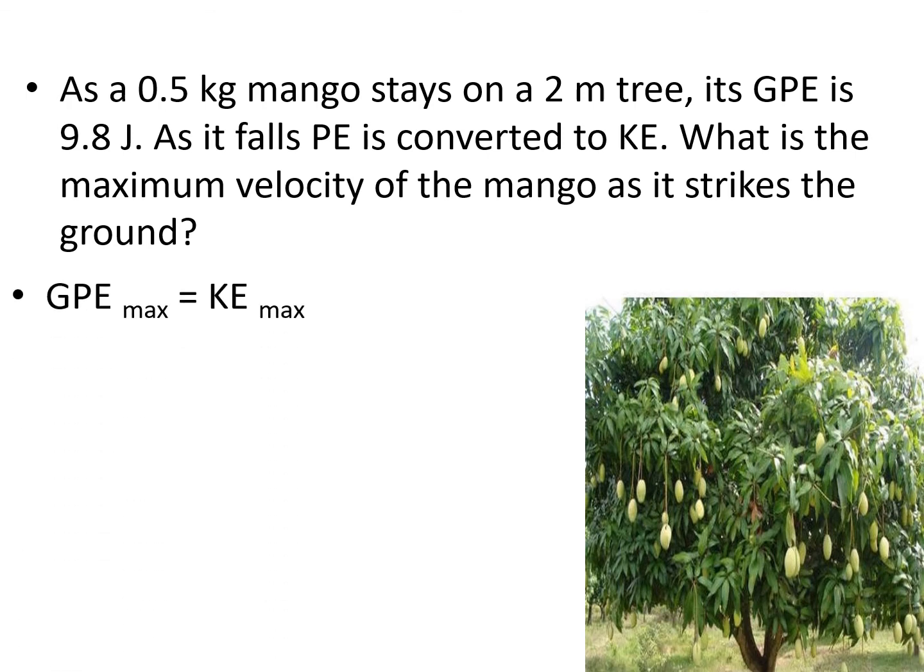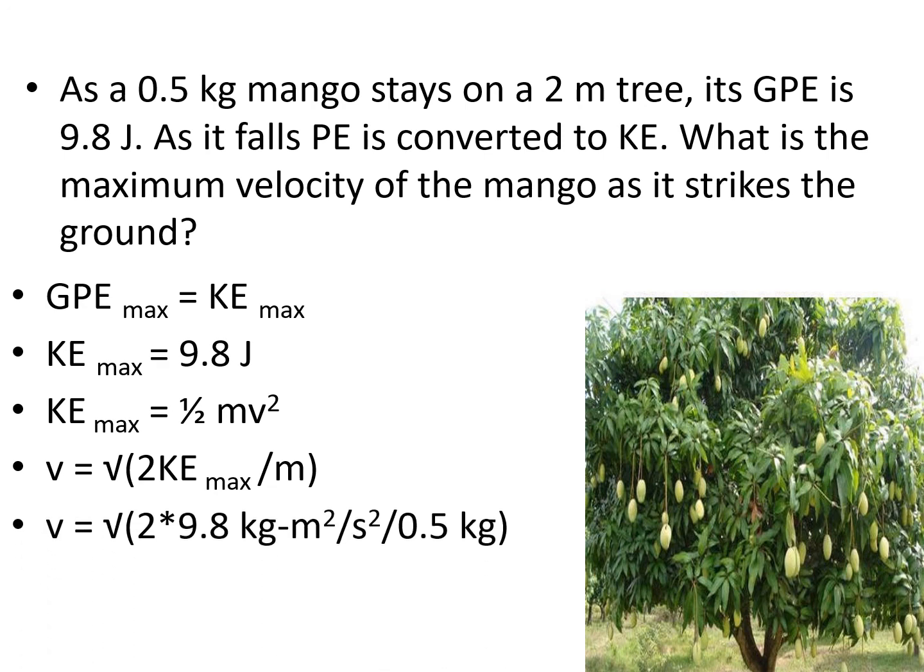Knowing that GPE maximum is equivalent to KE maximum, we can now say that KE max is equal to 9.8 joules. So, KE max is equivalent to one-half MV squared. Deriving the equation, we have V is equal to the square root of quantity 2 KE max over M. Substituting the given values, we can now have the maximum velocity of 6.26 meters per second.